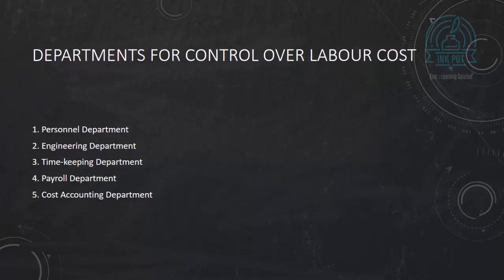What are the departments involved in labor cost, and how can we control the cost? The first department is the personnel department. The work of personnel department is to recruit the labor, train them, and place them on the job. They take labor requisition from the department and maintain employee history cards.